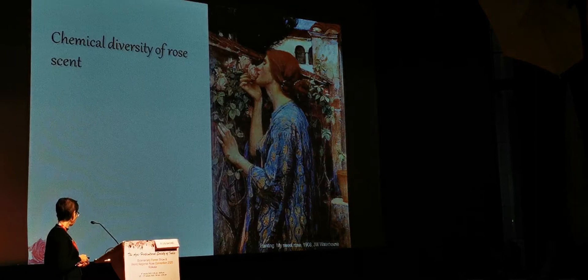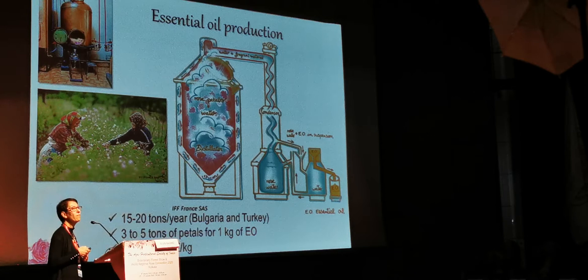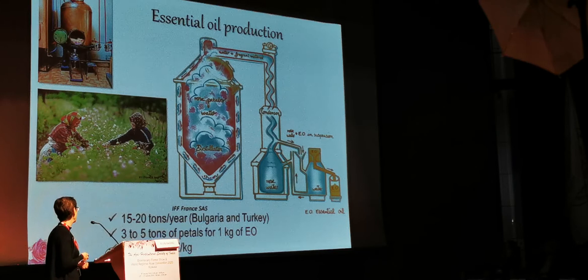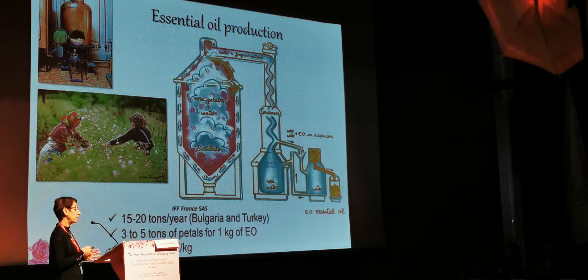Coming back to the rose, a little bit about the chemical diversity of rose scent. We know very well that rose is heavily used for essential oil production; we use special cultivars for this purpose, one of the most famous being Rosa damascena. This is not a huge production — about 15 to 20 tonnes a year — the main producers are Bulgaria and Turkey, but also India. You have to use three to five tons of petals to have only one kilo of essential oil, which is why this product is so expensive.